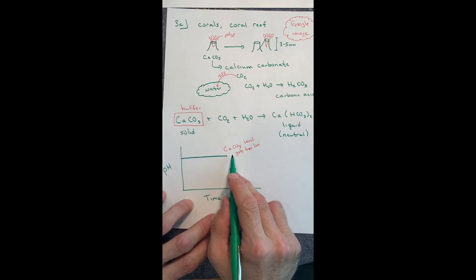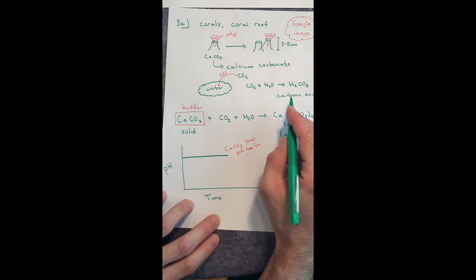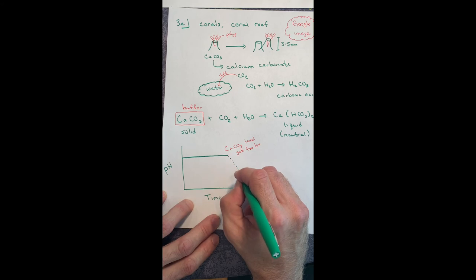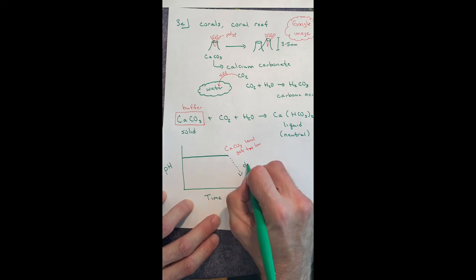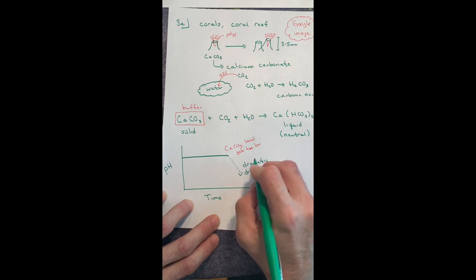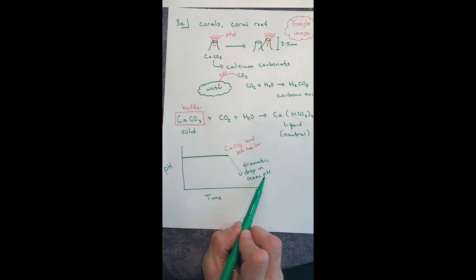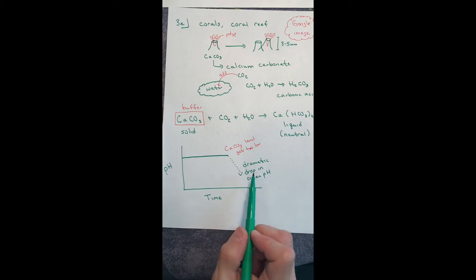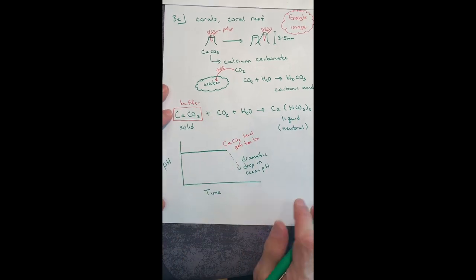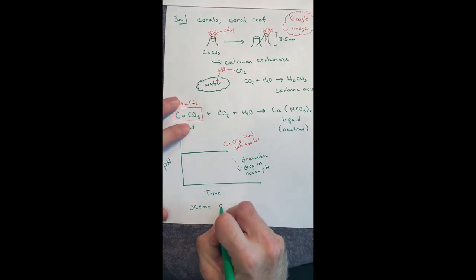Because the CaCO3 is dissolving to react with the CO2. But what happens when the CaCO3 levels get too low? And you basically run out of CaCO3? Well, then what's going to build up? What's going to build up is your carbonic acid. And what you're going to see is a dramatic drop in ocean pH, in marine pH. Well, if you take the marine environment and you dramatically drop the pH, what's going to happen to all the enzymes? The enzymes of all these organisms are going to denature. The enzymes are going to stop working. What happens to the organisms? They die.